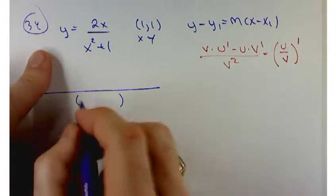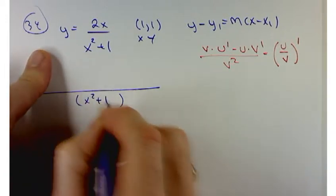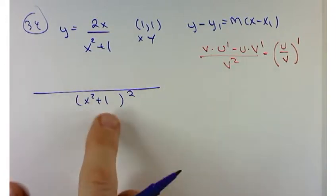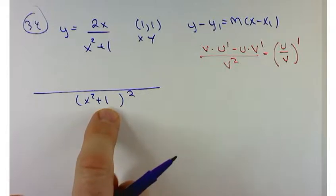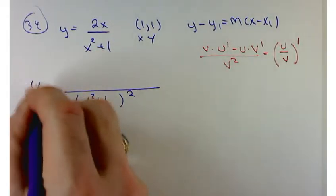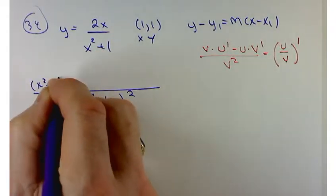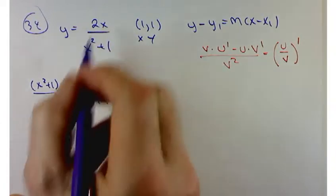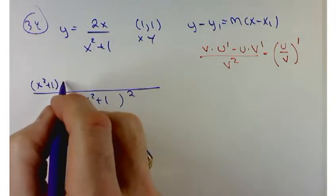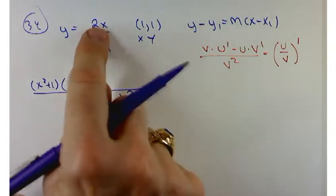So, square of the denominator, x squared plus 1 squared. And then the denominator, so x squared plus 1 times the derivative of the numerator. What's the derivative of the numerator? 2.